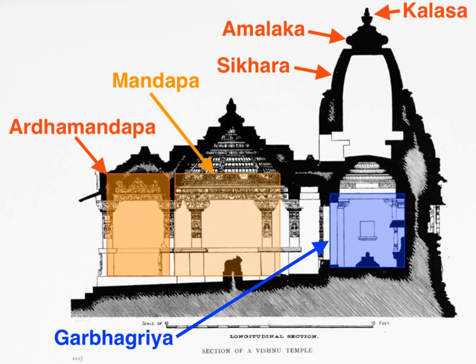Hindu temple architecture, as the main form of Hindu architecture, has many varieties of style, though the basic nature of the Hindu temple remains the same, with the essential feature being an inner sanctum — the Garbha Griha or womb chamber — where the primary murti or image of a deity is housed in a simple bare cell. Around this chamber there are often other structures and buildings, in the largest cases covering several acres.